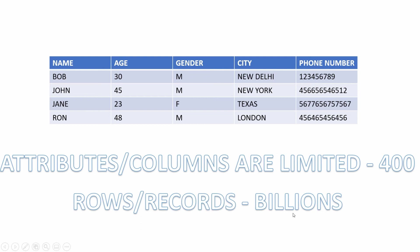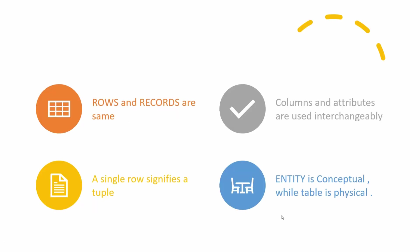Let's do a quick recap before we create our first table in the database. Rows and records are the same. Most of the time, you will only hear about tables, rows, and columns. I just want to make sure that if someone mentions records, entities, attributes, or tuple, you know what they are.